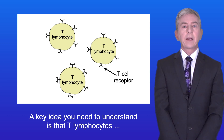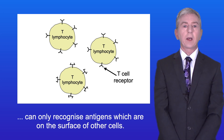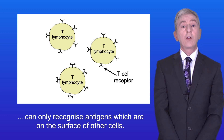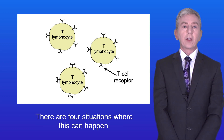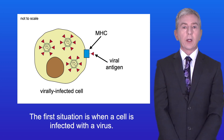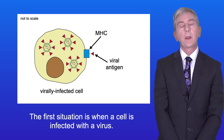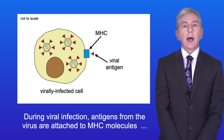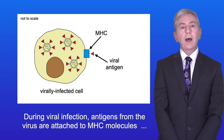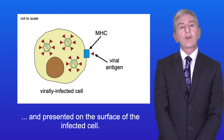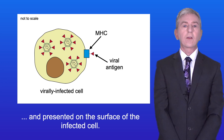A key idea you need to understand is that T lymphocytes can only recognize antigens which are on the surface of other cells. There are four situations where this can happen. The first situation is when a cell is infected with a virus. During viral infection, antigens from the virus are attached to MHC molecules and presented on the surface of the infected cell.